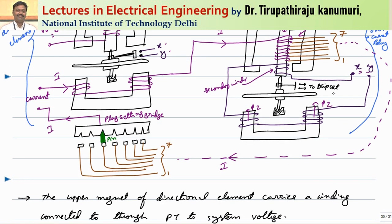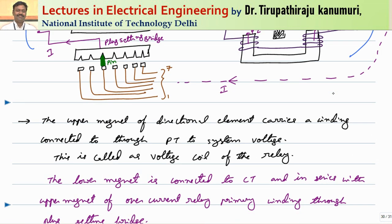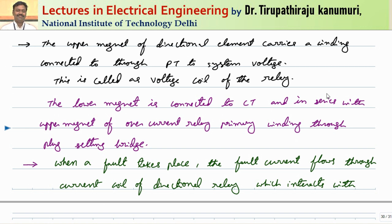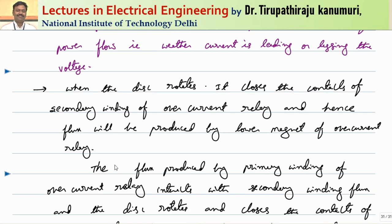The overcurrent relay operation has already been discussed. In this class we are only discussing the properties of the directional relay — its characteristics and how to adjust the angle. To summarize: the upper magnet of the directional element carries a winding connected through a potential transformer to the system voltage — this is the voltage coil. The lower magnet is connected to the CT and in series with the upper magnet of the overcurrent relay primary winding through the plug setting bridge. The disk rotates only if torque is produced in a particular direction, which depends on whether the current is leading or lagging the voltage.